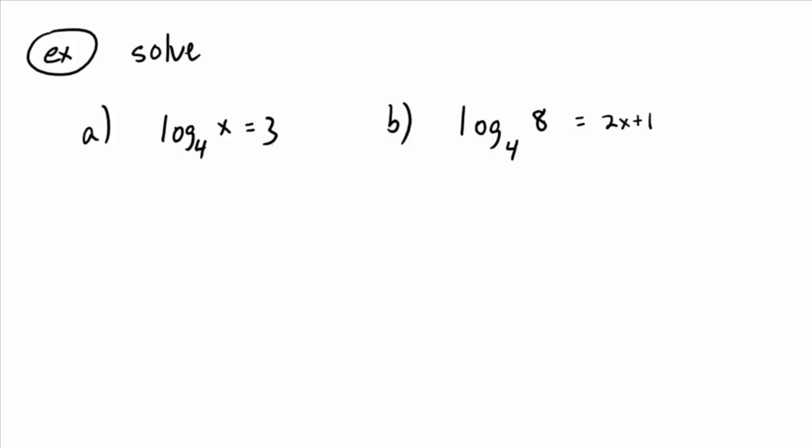Convert. Convert. So if we convert log base four of X to exponential form, what do we get? Four to the third equals X. I'm going to put the X on the left side. Four to the third equals X or X equals four to the third. Is that true? Is that the conversion? Yeah. Oh, then it's solved, isn't it? Well, I mean, we should probably write what four to the third is. What is that?